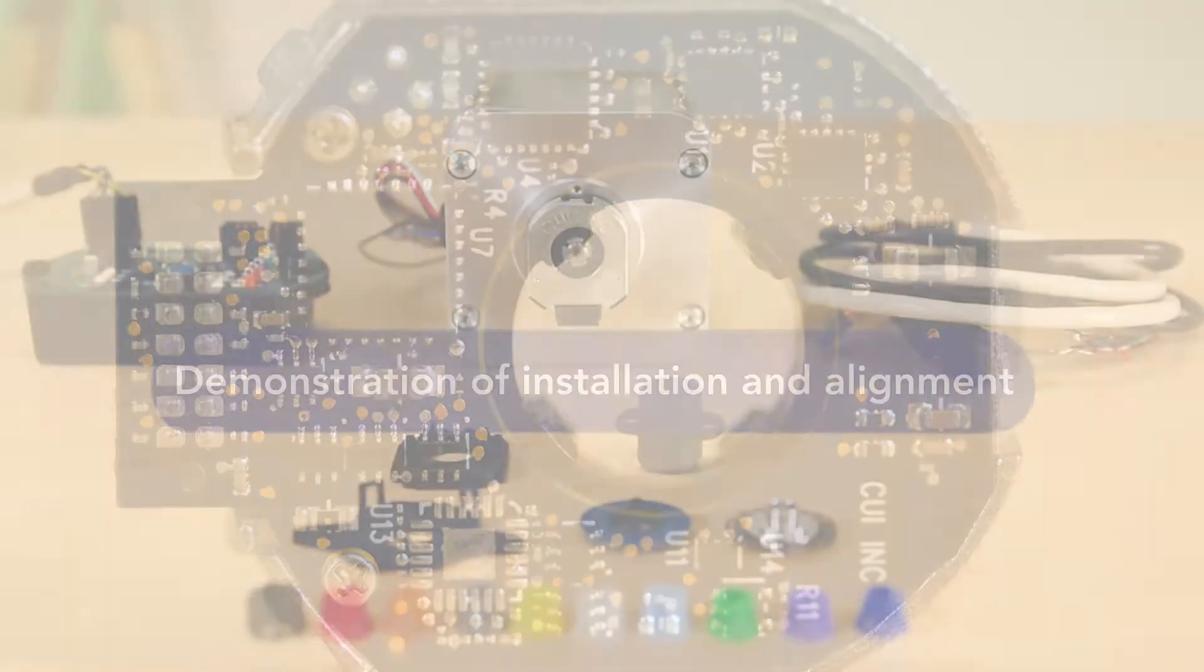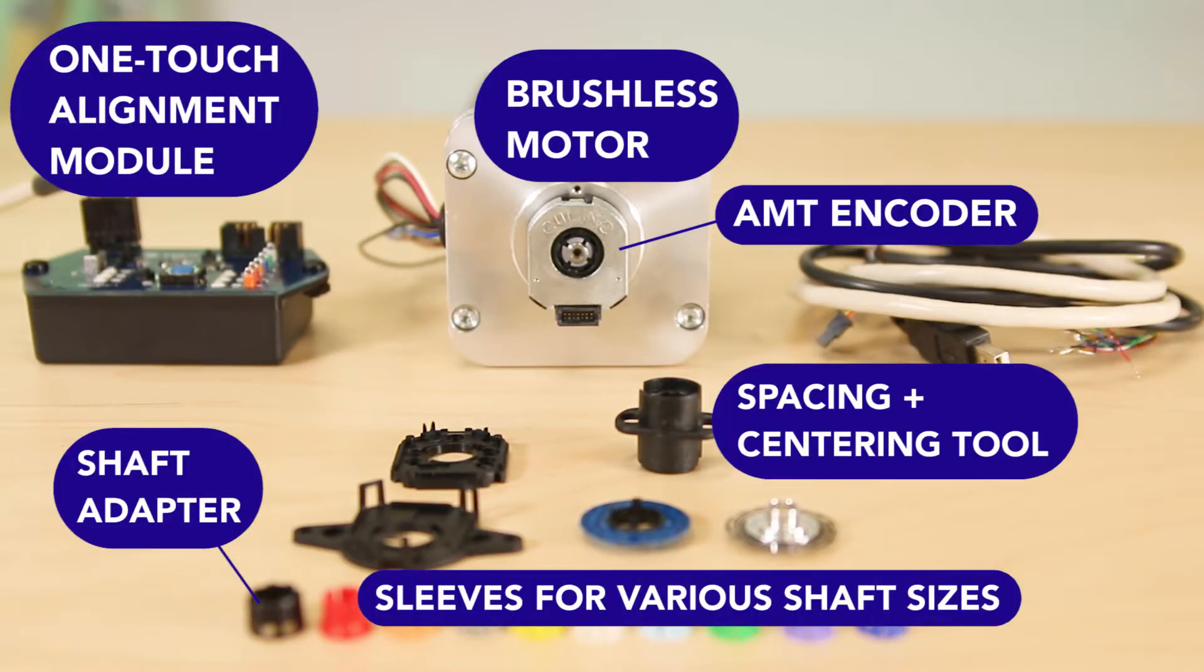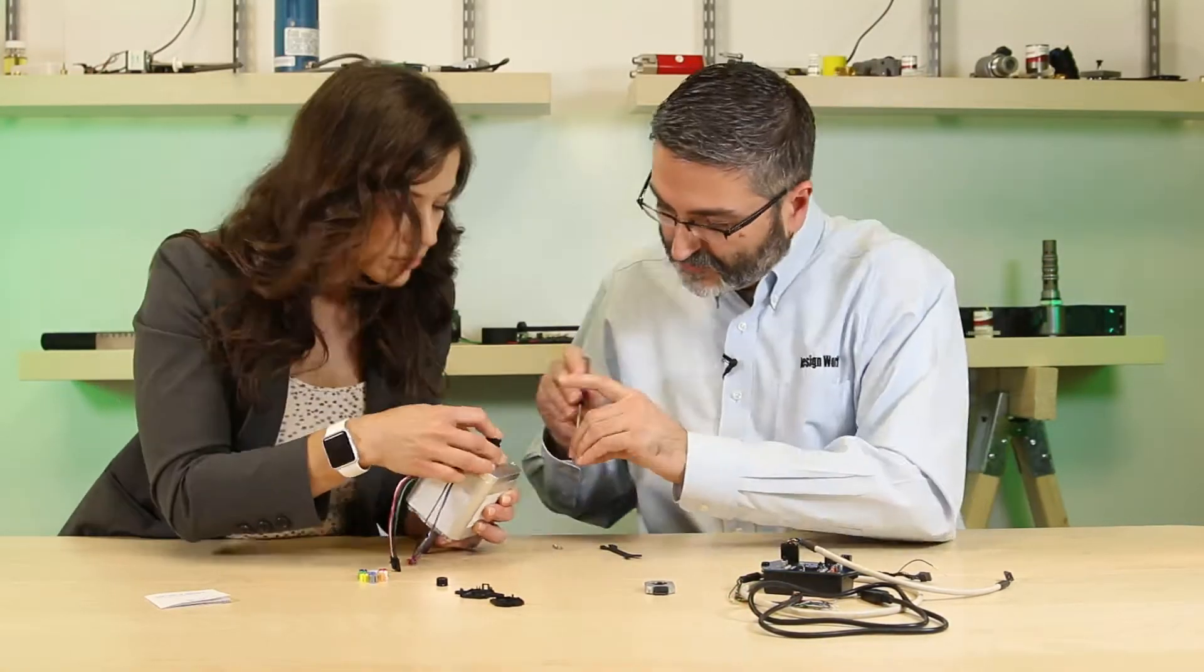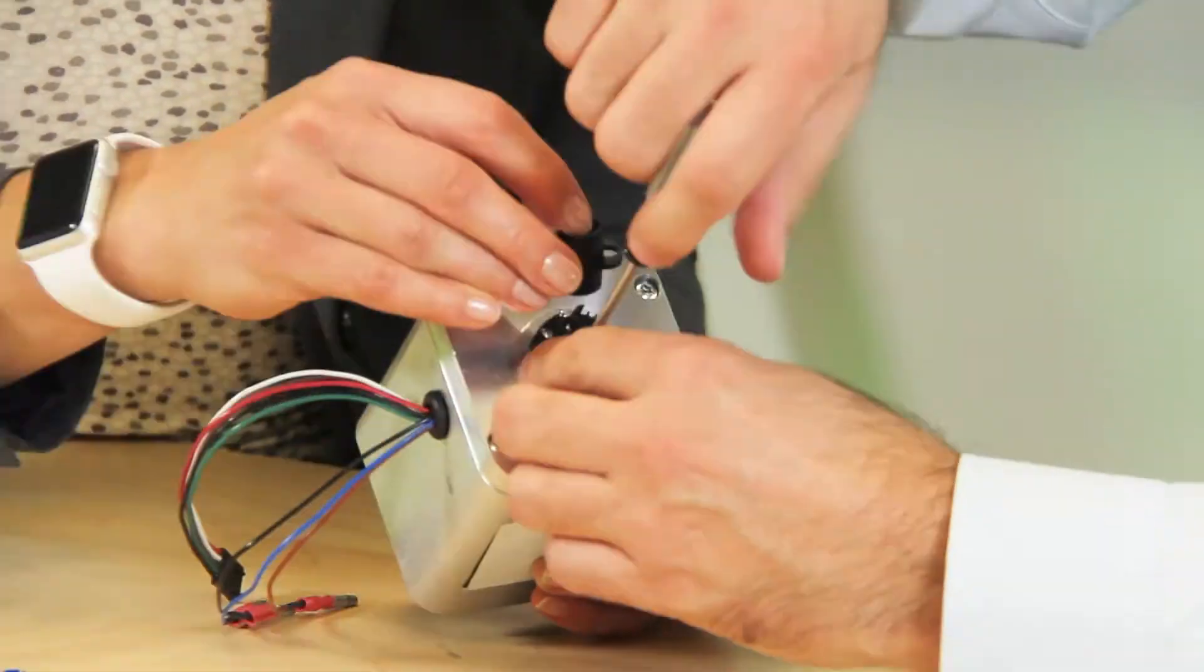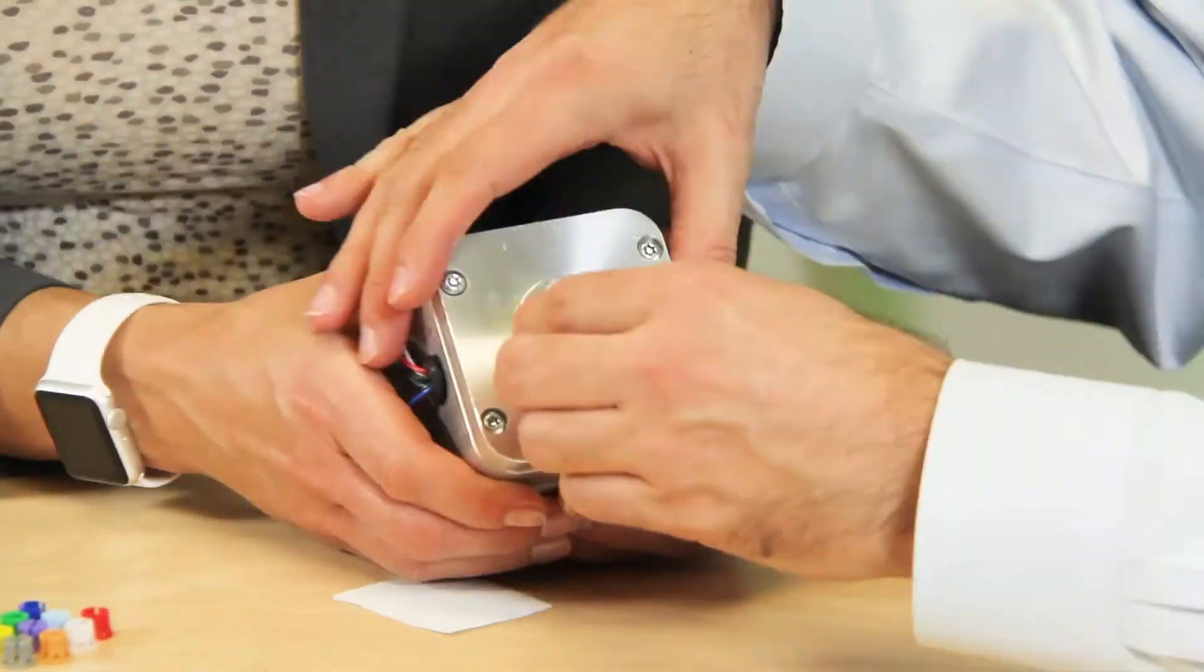Now let's review how to install and align an AMT31 commutation encoder to a brushless DC motor. First, we mount a sleeve matching the motor output shaft diameter and adapter using simple tools from CUI. Then we mount the base for the encoder to the motor housing with screws. Next, we take the AMT31 encoder housing and snap it into place on the base.